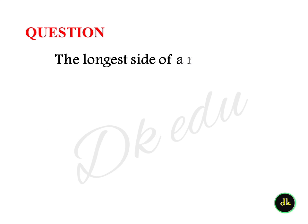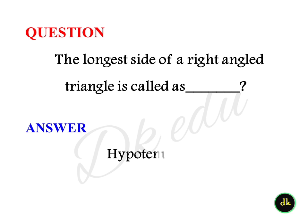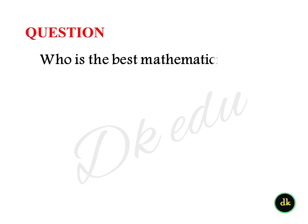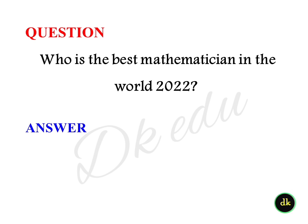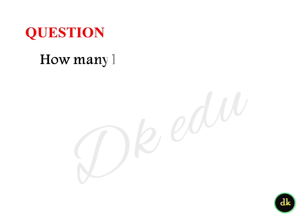The longest side of a right-angled triangle is called? Answer: Hypotenuse. Who is the best mathematician in the world in 2022? Answer: Professor James Maynard. What is the product of 247 × 11 × 1 × 0? Answer: 0.